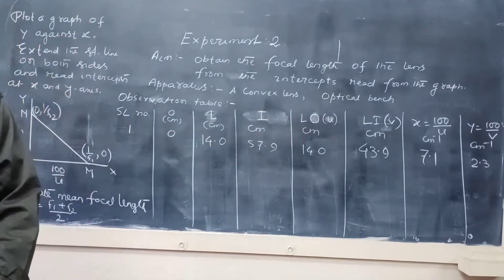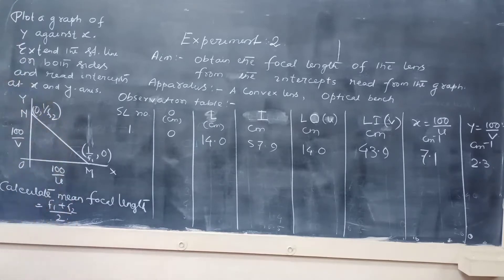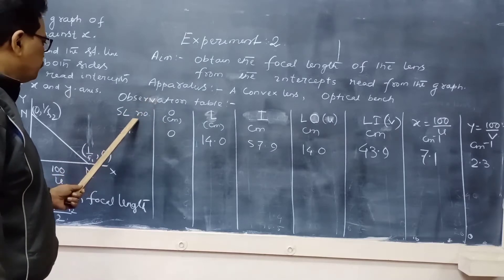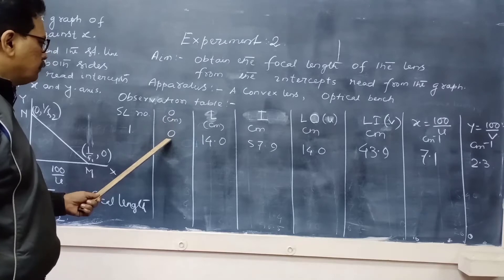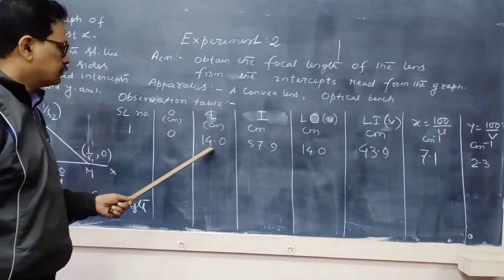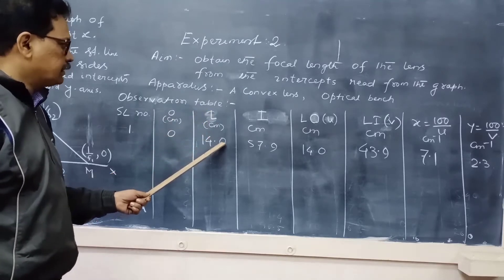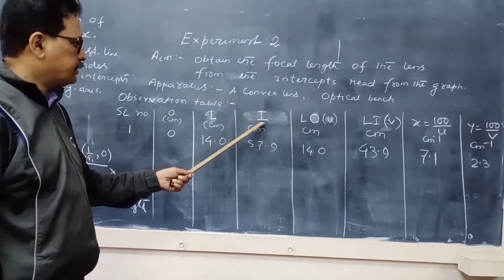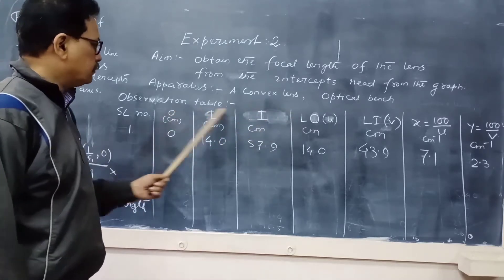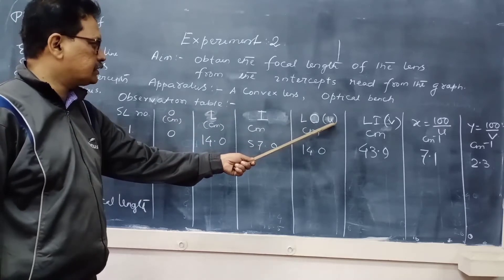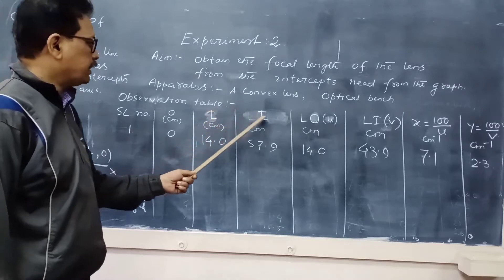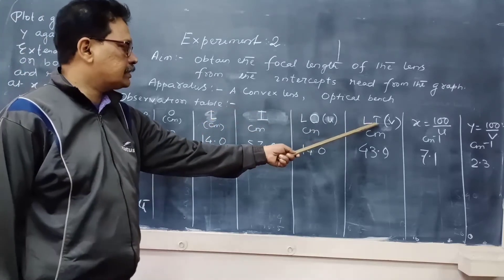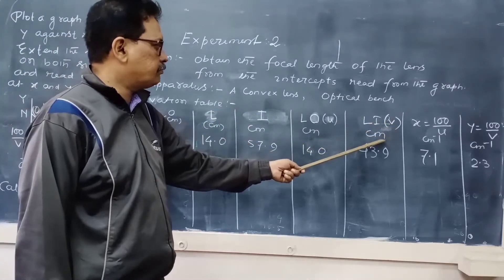To determine this focal length, we are using this observation table. First column: serial number. Second column: position of object which is always 0. Then position of lens, first observation 14 cm. Position of image in I. Distance between L and O is object distance which is denoted by U in cm. Distance between lens and image, that is image distance LI denoted by V measured in cm.